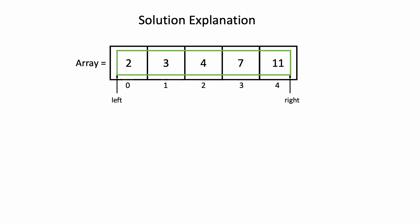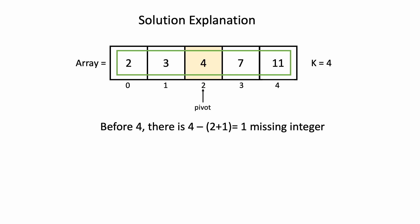Now that we know we have to use binary search using missing integer information, let's visualize our solution. We begin our search in the full array; the search window is represented by left and right pointers. We choose the middle element as the pivot and compute the missing integer information based on index — there is 1 missing integer before element 4. Since we need to find the 4th missing positive integer, we direct our search to the right.